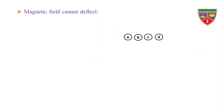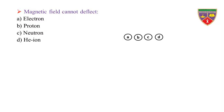Magnetic field cannot deflect: Option A, electron. Option B, proton. Option C, neutron. Option D, helium ion. The key is neutron.